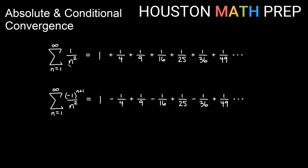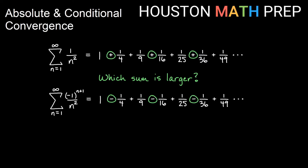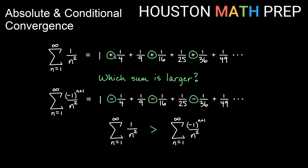We've got the sum of 1 over n squared, and its alternating version: 1 minus 1/4 plus 1/9 minus 1/16. If we want to look at which sum is larger, we can notice the similarities and differences. The odd number terms are all the same — 1 plus 1/9 plus 1/25, etc. It's the even terms where we have sign differences: plus 1/4 versus minus 1/4, 1/16 versus minus 1/16. The top sum is going to be larger than the bottom sum because for the even terms we have a positive amount, but we're subtracting off some stuff every even term. So the sum of regular 1 over n squared is going to be bigger than the sum of the alternating 1 over n squared.